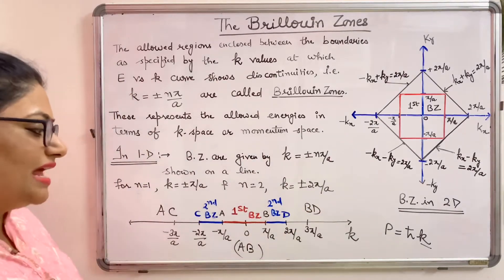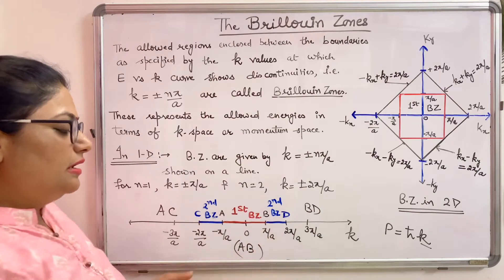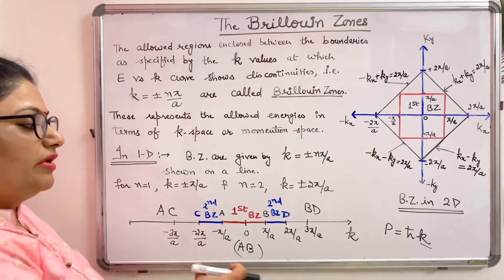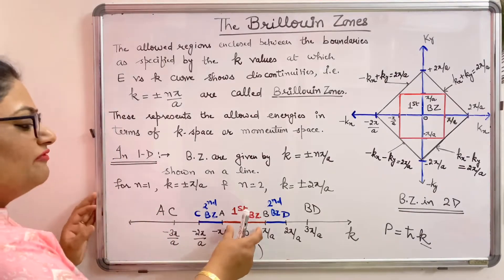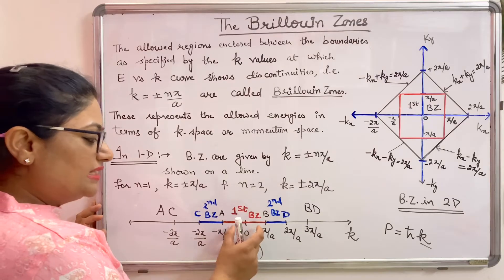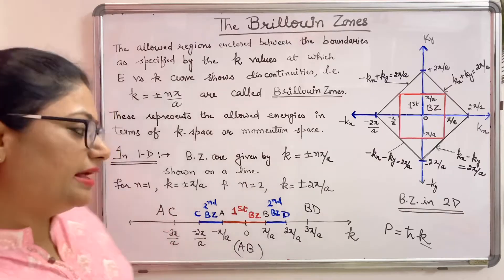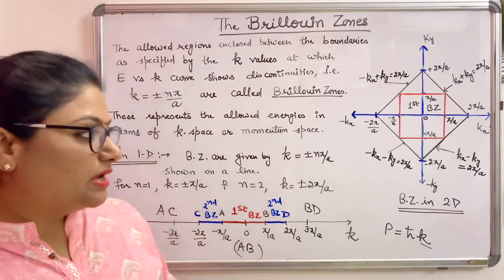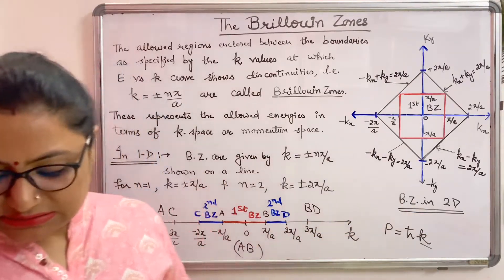Similarly for n equal to 3, we can draw the third Brillouin zone and so on. Only the first Brillouin zone is a single line segment; the second, third, fourth Brillouin zones each consist of two line segments. Now we will discuss Brillouin zones for a 2D lattice.